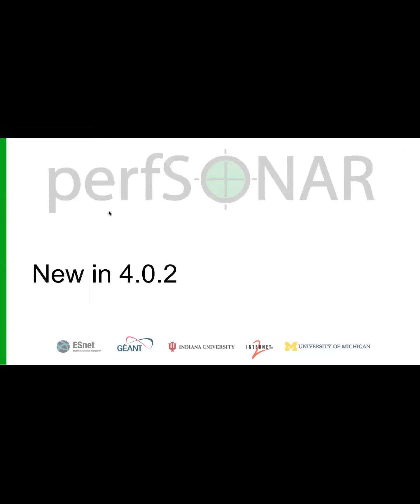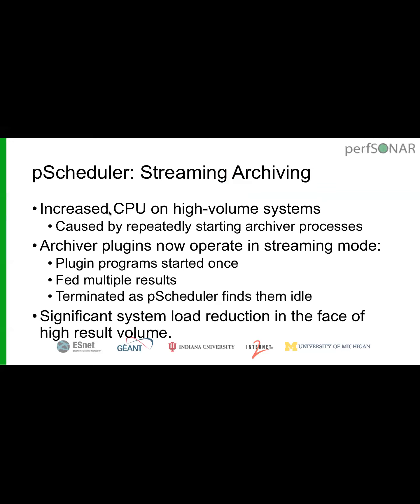That brings us to 4.0.2. One note: there's actually quite a bit of new material in 4.0.2 — it's slightly more than the minor release number implies. One of the big things we've implemented is streaming archiving. When we first rolled out 4.0, on systems doing high volume there was quite a bit of CPU utilization, caused by the fact that every time there was a measurement to archive, we would start a program, let it do its work, terminate, and repeat.